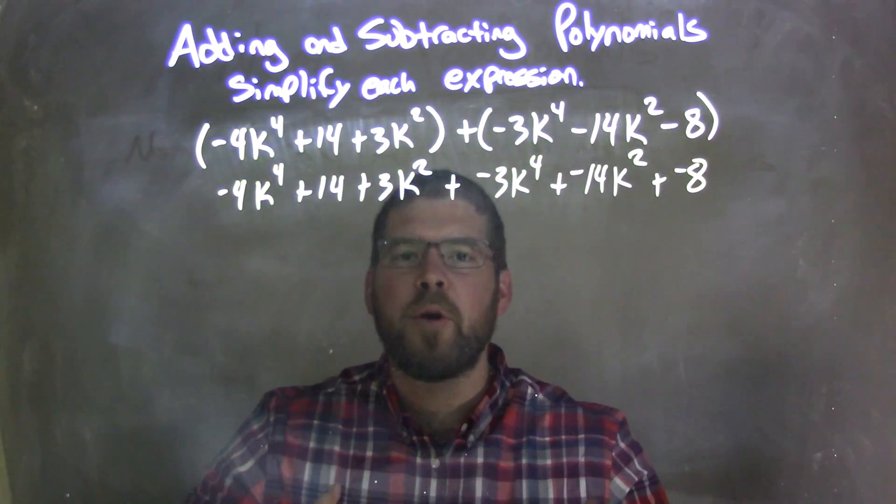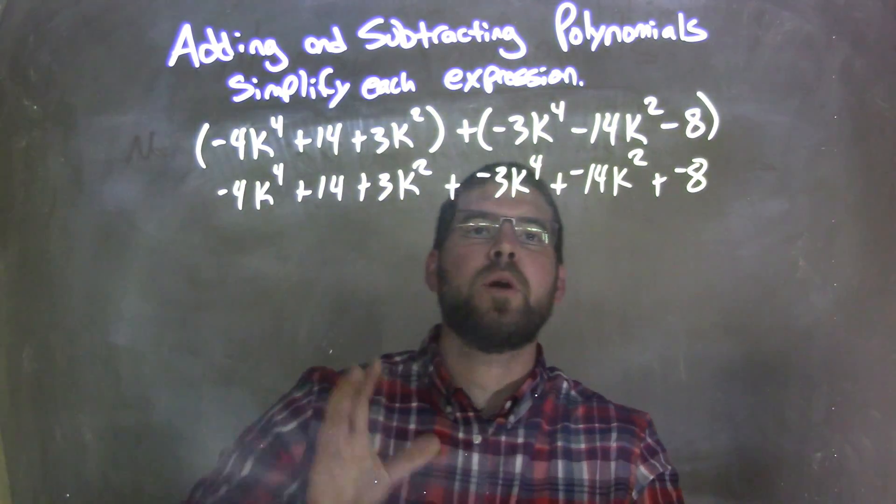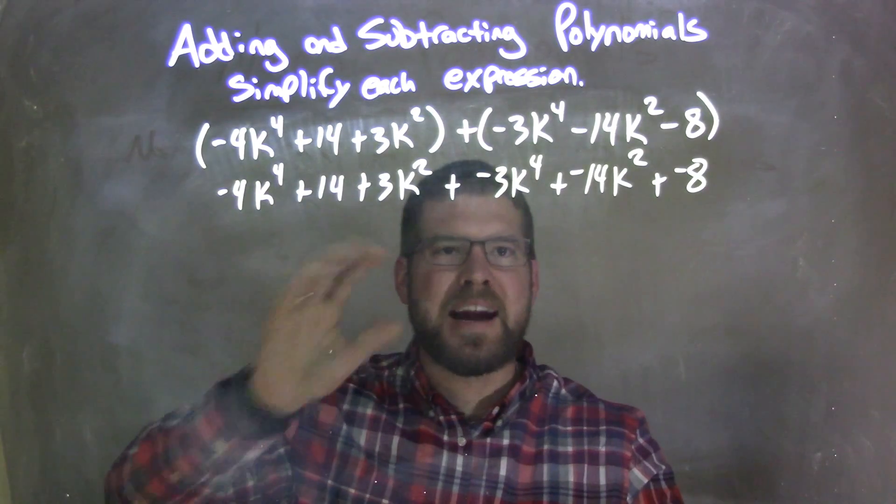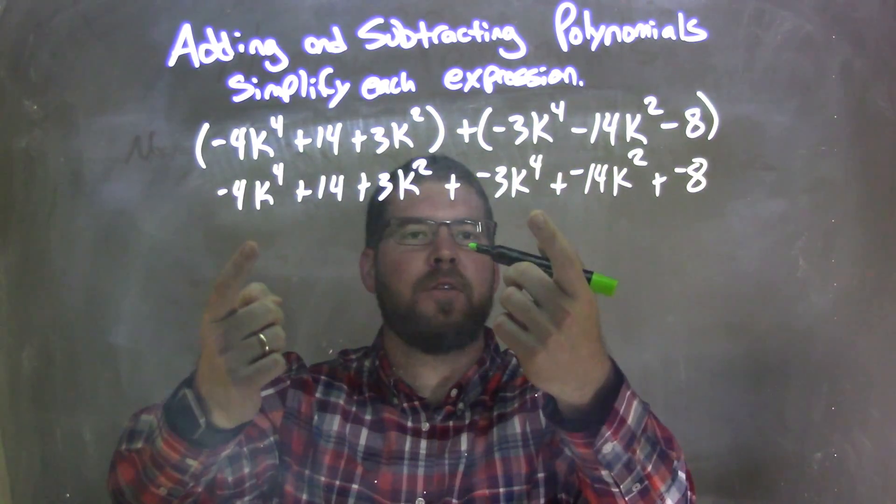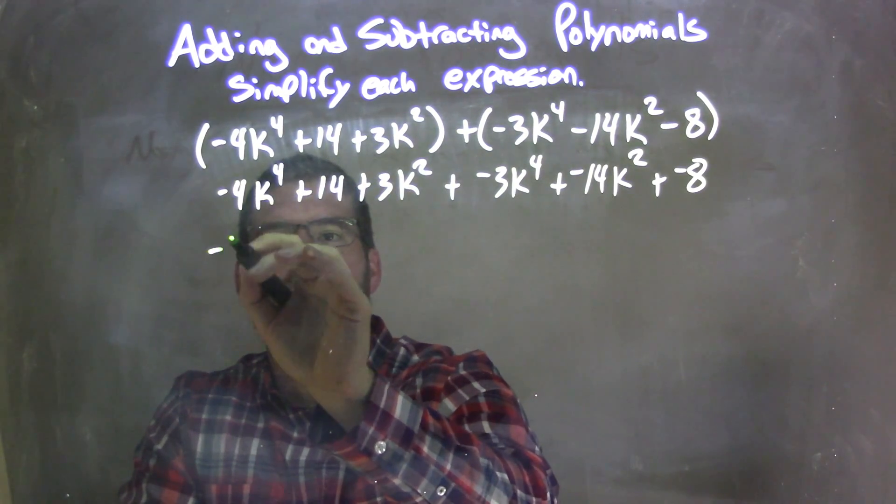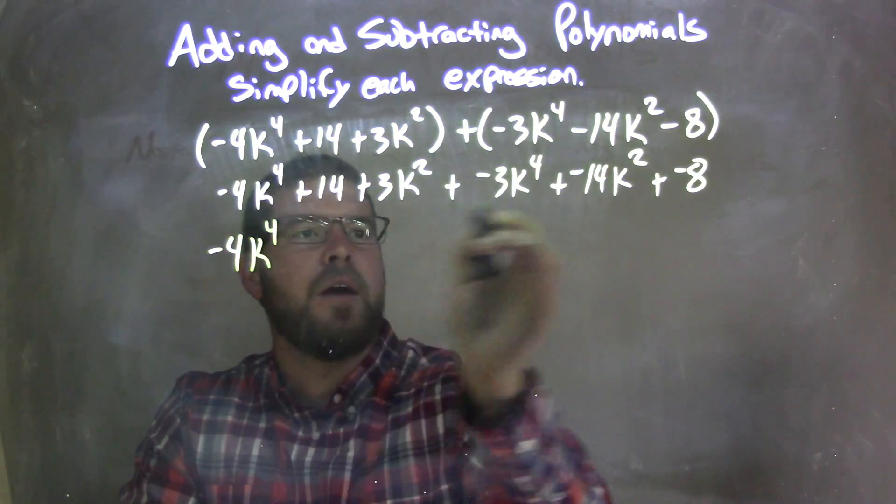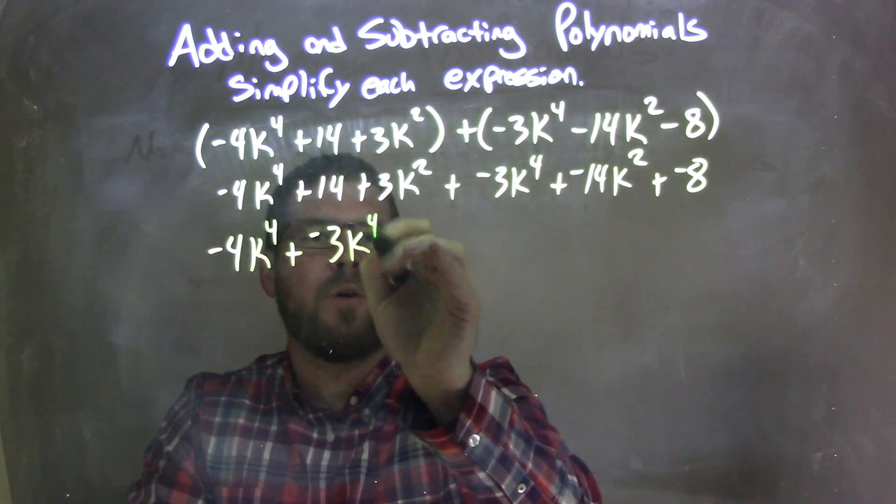So now, I'm going to rearrange, just like we did the other ones, putting our like terms first, and highest degree first. So I see the 4th powers. Both of them had something to the 4th power. So I'm going to rewrite that first. Negative 4k to the 4th, and then plus a negative 3k to the 4th.